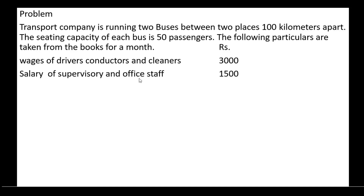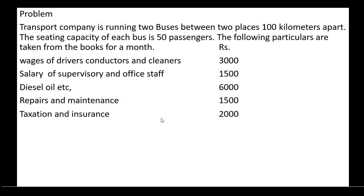Diesel, oil, etc.: Rs. 6000. Repairs and maintenance: Rs. 1500. Taxation and insurance: Rs. 2000. Depreciation: Rs. 3000. Interest and other charges: Rs. 2500. The actual passengers carried over 80% of the capacity. The buses ran on all the days.